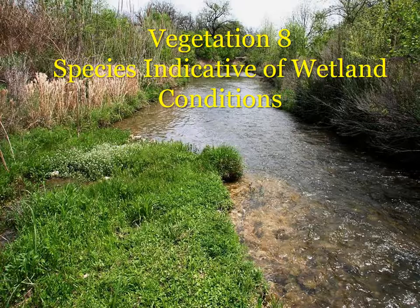Item eight on the checklist has to do with plant species which indicate wetland conditions. Here it's important to know whether plants are obligate, facultative wetland, or facultative — those plants that indicate water is being stored in the banks and in the floodplain. You're answering yes or no: are those plants present or absent?